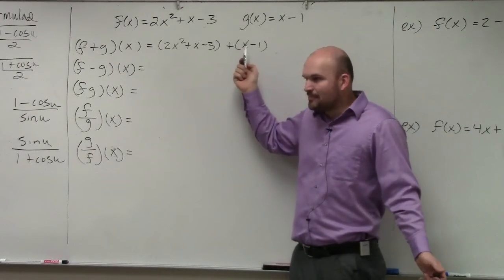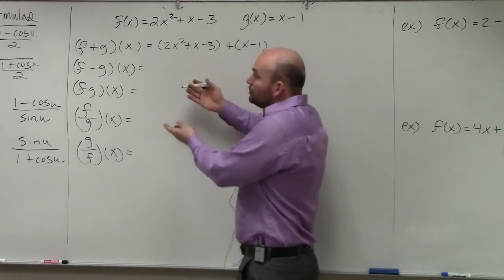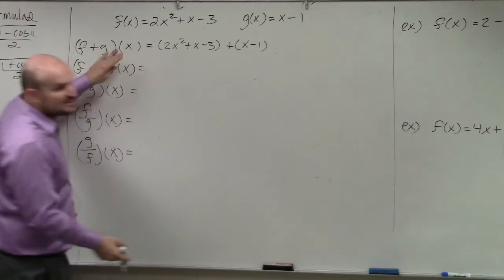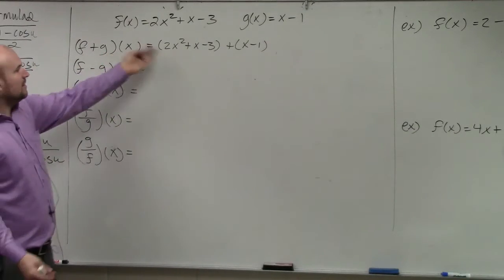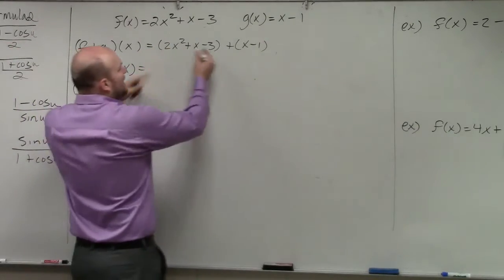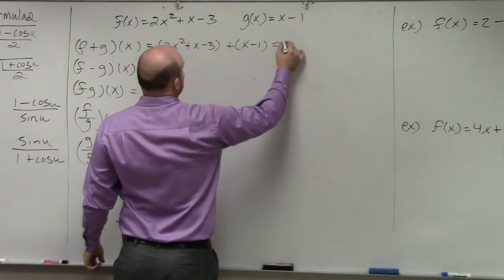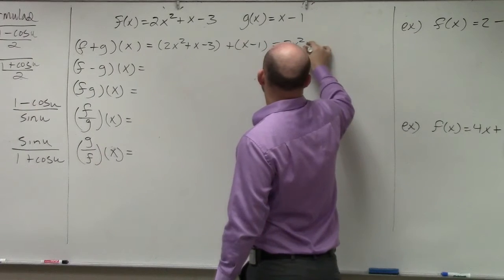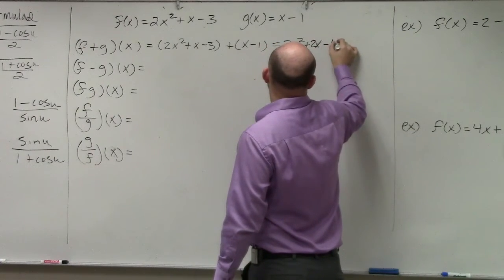I really don't need my parentheses, though, but I just used it so you guys could see. All you're doing is taking f of x plus g of x. That's what this says. Well, I don't really need my parentheses here and I can just combine. I have 2x squared plus 2x minus 4.